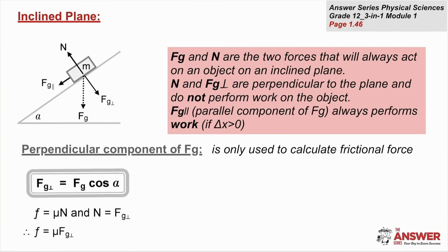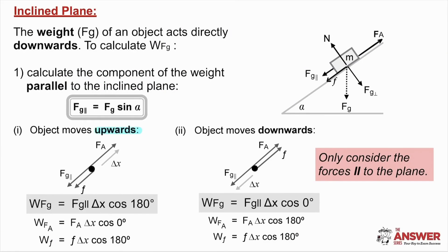On the inclined plane, the gravitational force is usually divided into two components: parallel and perpendicular to the slope. The perpendicular component does no work when the object is sliding up or down the slope, but you do sometimes need it to calculate the frictional force using the coefficient of friction. If we look at the object moving up the slope, the applied force is acting in the same direction as delta x, so the angle between the two is 0 degrees and the applied force does positive work. The gravitational force acts in the opposite direction — the angle is 180 degrees — and so the gravitational force does negative work. Friction, also acting down the slope, is at 180 degrees, and therefore friction also does negative work.